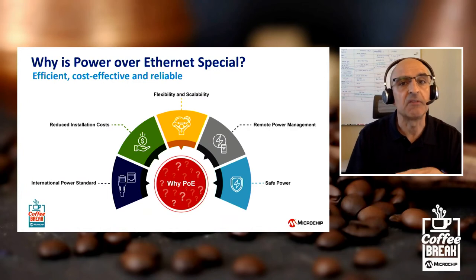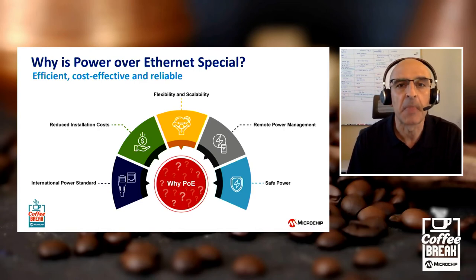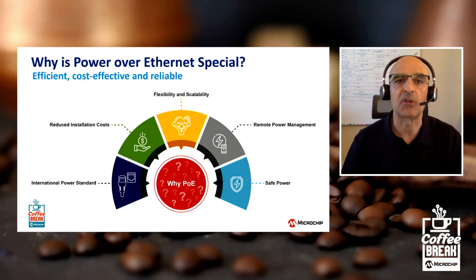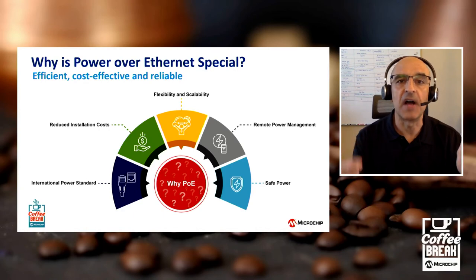Along that same line, you could even schedule your power. On weekends, for example, you could turn off all your access points to help save some energy. And the last thing to mention is that we call it safe power — the ports are not enabled unless a valid power device or PD is plugged in and detected. So if you stick your finger in there, you're not going to electrocute yourself. It's not until a valid PD is detected before it turns on.